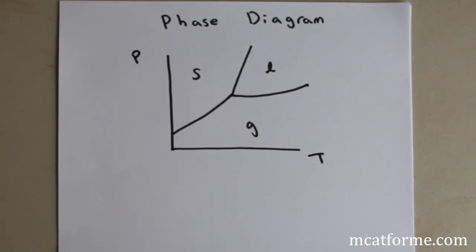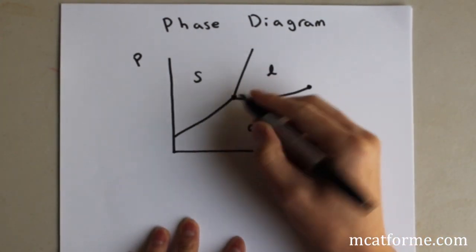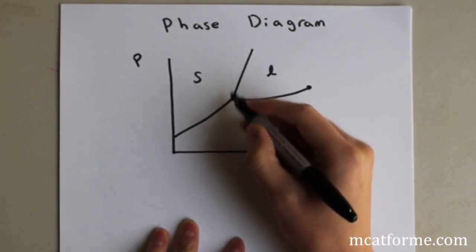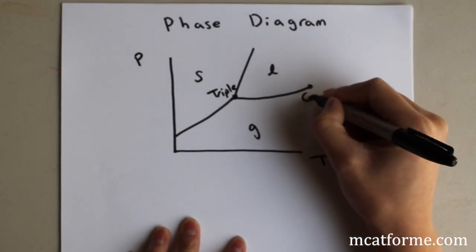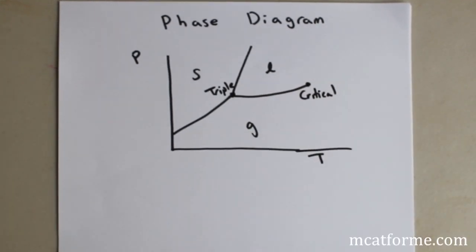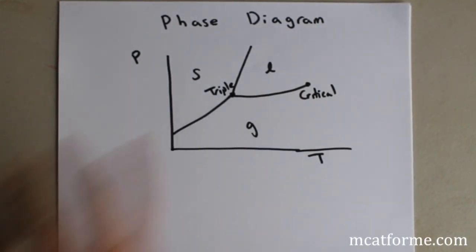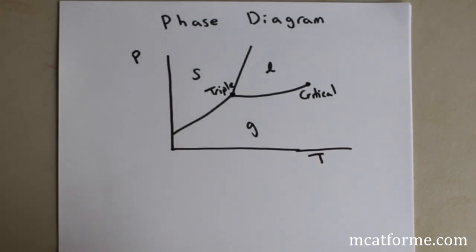Pretty basic stuff, but there are two points we need to keep track of. The first is called the triple point and the second is called the critical point. The triple point is when there is equilibrium between solid, liquid, and gas — all three converting between each other in equilibrium at a specific pressure and temperature.